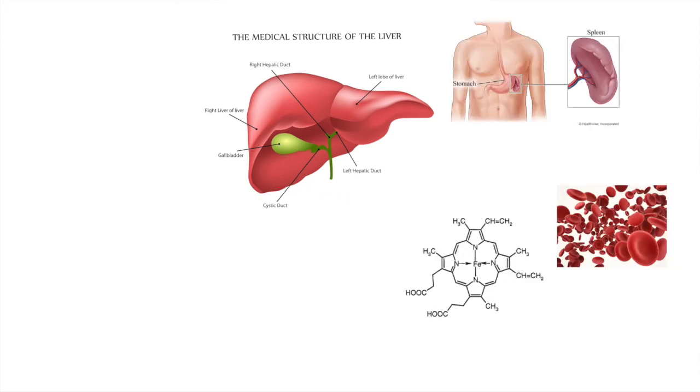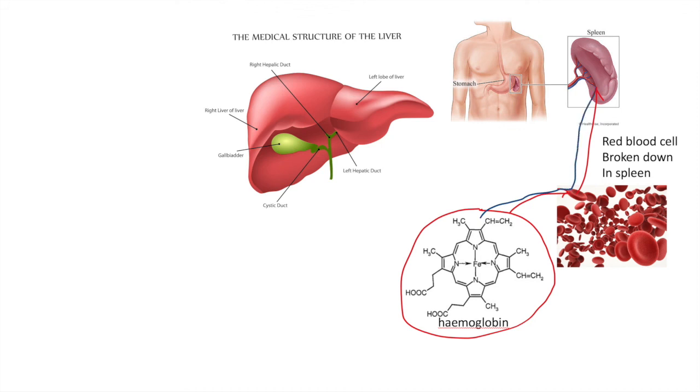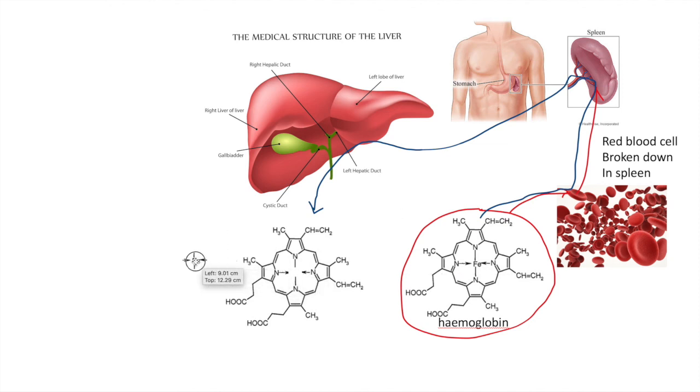You also need to know the breakdown of red blood cells. Red blood cells are broken down in the spleen, not really in the liver. But the hemoglobin, the oxygen carrier, is actually broken down in the liver. The iron component is stored and the rest of the material, the proteins, is used to create bile for digestion. So very efficient.